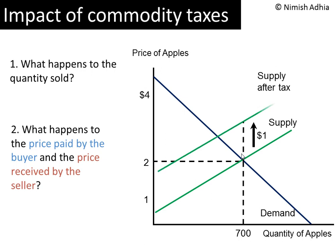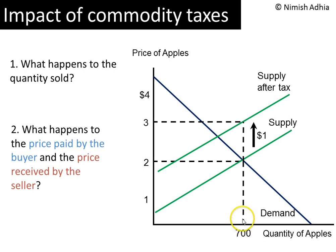So that's exactly what's going to happen. In this particular case, we know exactly how much the supply curve is going to shift. The vertical distance between the new supply curve and the old supply curve is going to be exactly $1. For example, at a quantity of 700, the height of the supply curve was $2; now it's going to be $3. So the vertical distance is always going to be $1.